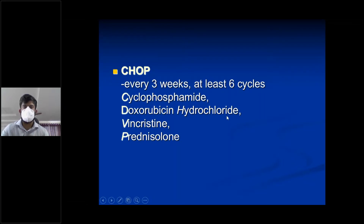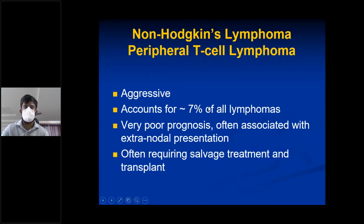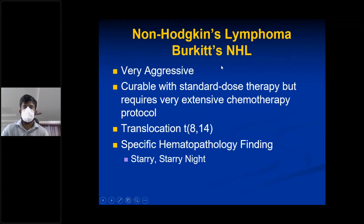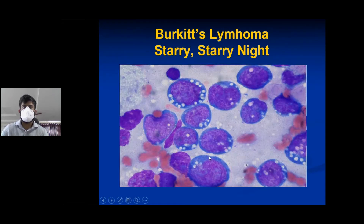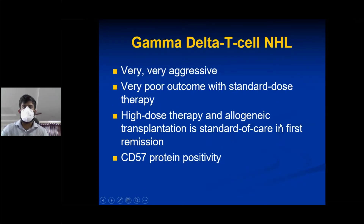CHOP regimen: cyclophosphamide, doxorubicin hydrochloride, vincristine, and prednisolone. R-CHOP adds rituximab to the CHOP regimen. Peripheral T-cell lymphoma is aggressive with very poor prognosis, usually requires salvage treatment and transplantation. Burkitt's lymphoma is very aggressive with poor prognosis; chemotherapy is extensive, translocation t(8;14), starry sky appearance. Lymphoblastic NHL is very aggressive, requires acute lymphocytic leukemia regimen. Burkitt's, lymphoblastic NHL, and gamma-delta T-cell all require allogeneic stem cell transplantation.